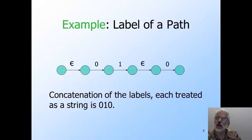Here's a pretty picture of a path in an epsilon NFA. It doesn't matter whether the states are distinct or if some repeat along the path. You just concatenate the labels. Epsilon, the string zero, the string one, the string epsilon again, string zero. The concatenation of these five strings then is the string zero, one, zero.